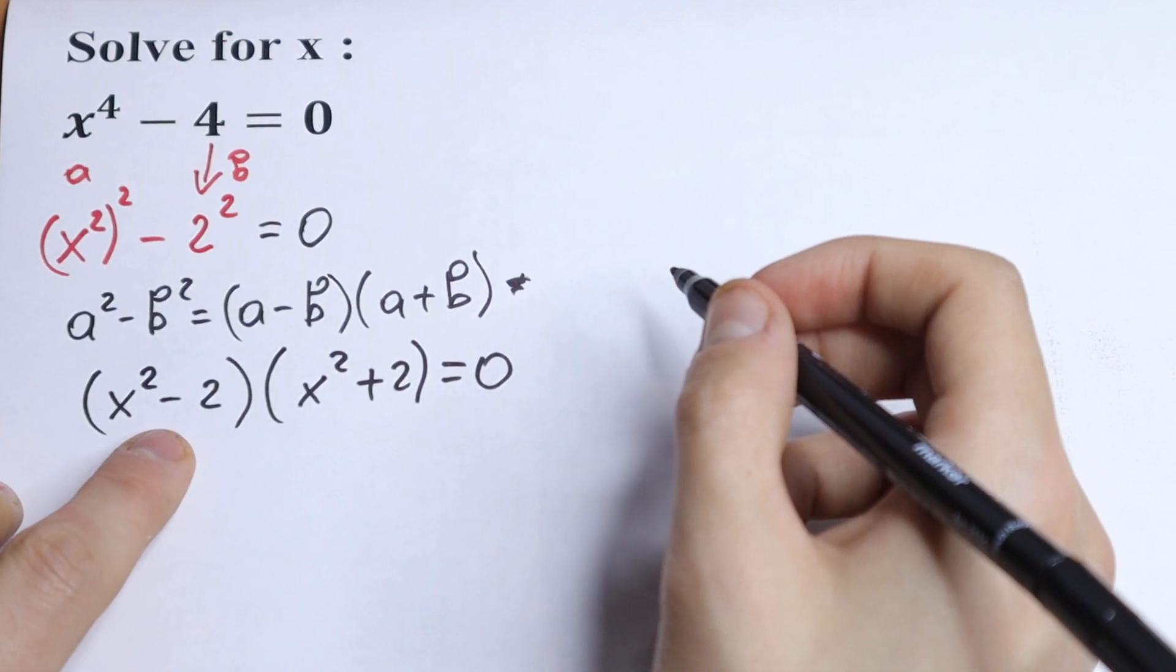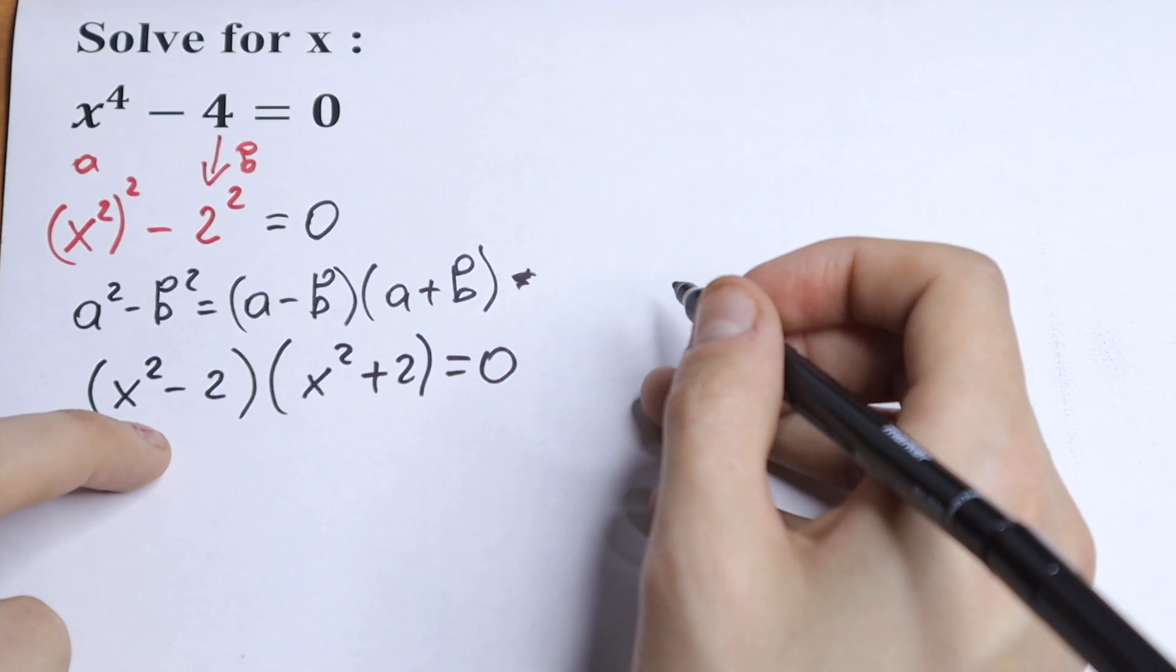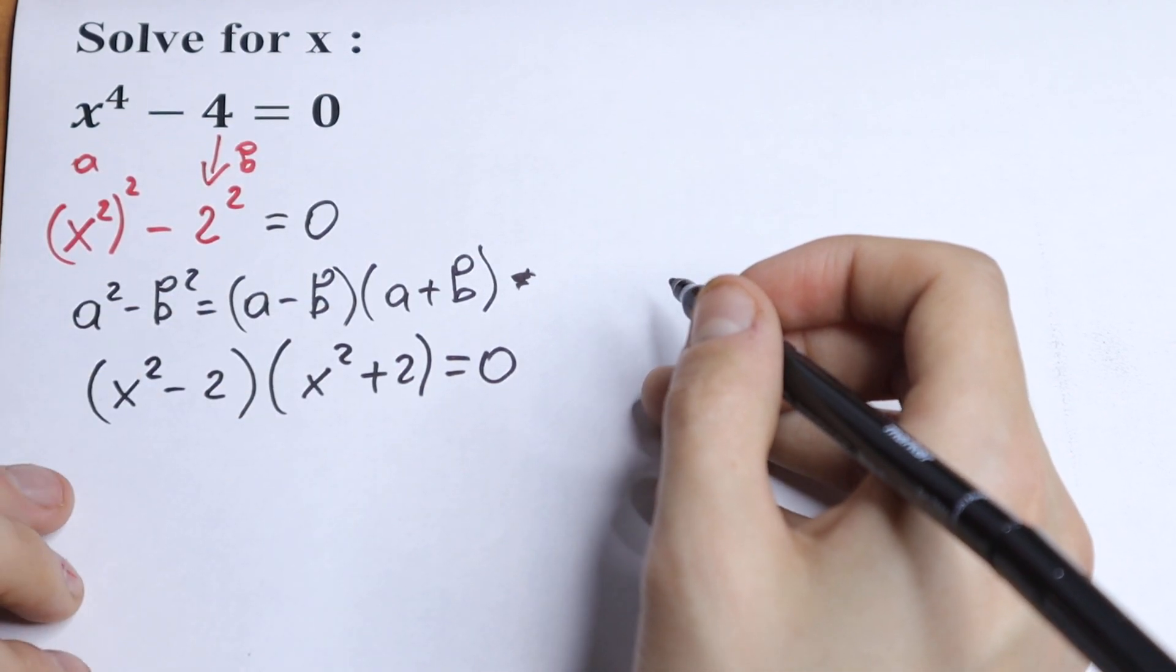If we have a situation like that, if we have two parentheses equal to 0, we write two equations. First parenthesis is equal to 0 and second parenthesis is equal to 0.